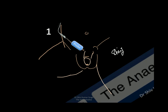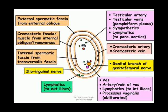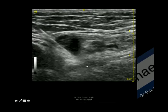We can also perform ultrasound-guided blocks. You can block the genitofemoral nerve and ilio-inguinal nerve near the pubic tubercle. After asepsis and preparing the probe, place the probe just along the inguinal ligament on its medial side, lateral to the pubic tubercle, where you should be able to see the spermatic cord. The ilio-inguinal nerve lies just under the external spermatic fascia derived from the external oblique, while the genital branch of the genitofemoral nerve lies on the cremasteric fascia from the internal oblique and transversus abdominis. Other structures include the testicular artery and veins, the pampiniform plexus, sympathetic fibers, lymphatics, and the vas deferens.